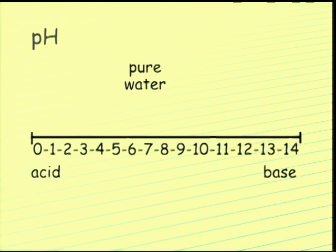Pure water has a pH of seven, the center of the range, neither acidic nor basic.